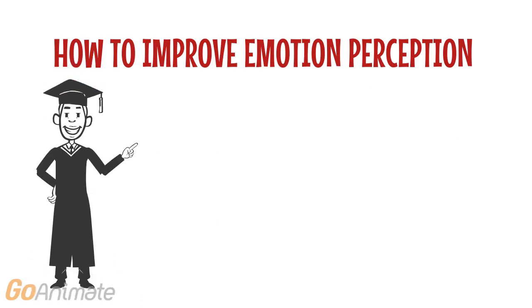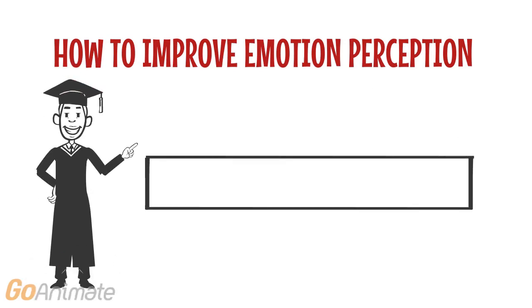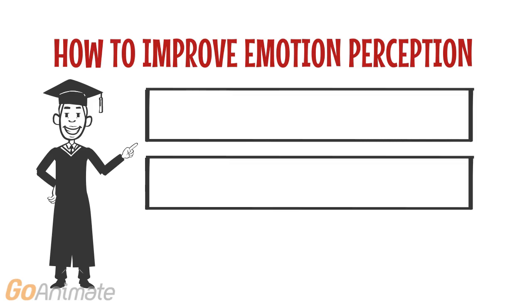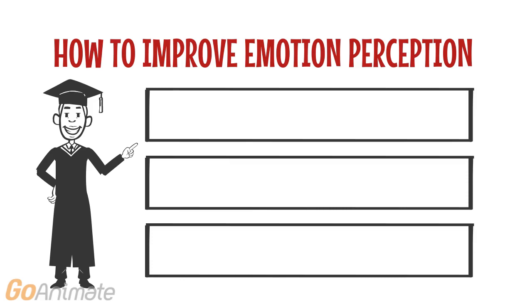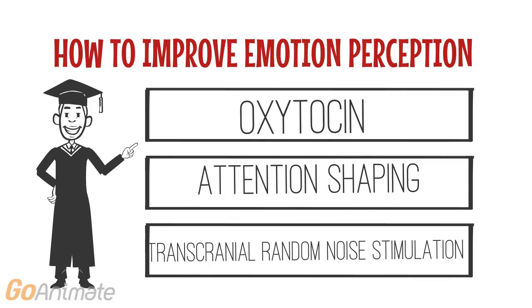Although, theoretically, emotion perception should be simple for humans — as the structural hypothesis states that emotion perception is innate, reflexive, and a product of evolutionary adaptations — research suggests that this is not the case. Therefore, research has aimed to acquire methods to improve emotion perception in those with an impairment, such as schizophrenic patients and the elderly, to enhance their social functioning. Here, we will discuss three empirically supported methods.